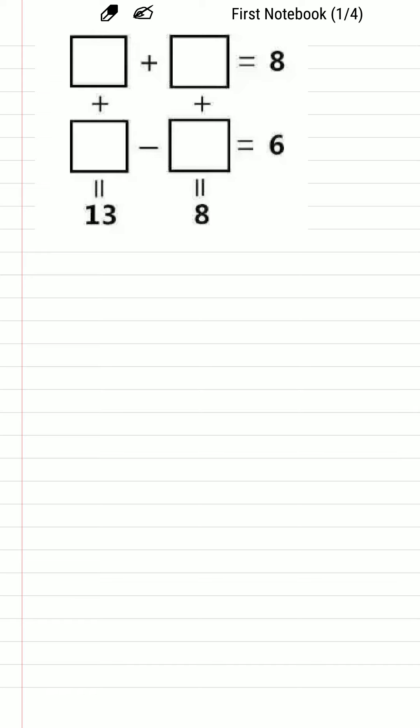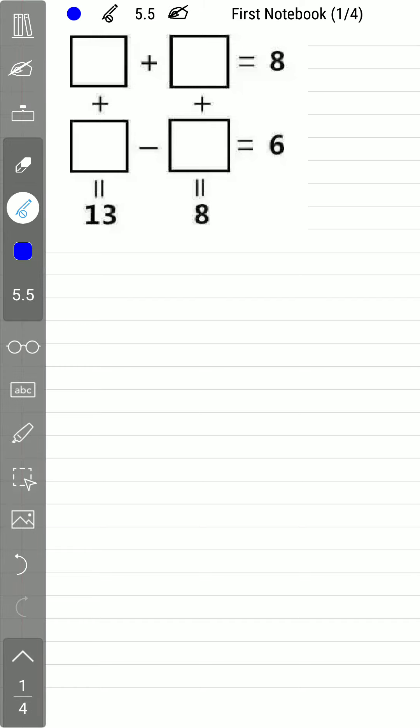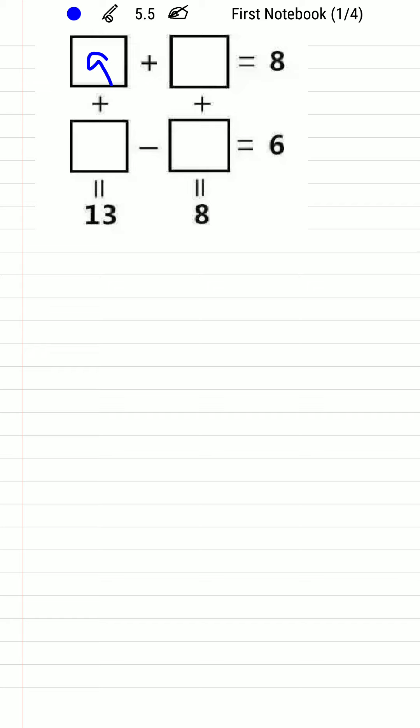Let us begin. As you can see in this figure, we need to enter numbers in the four blocks such that they satisfy the given conditions. Let us assume the first block value as a, second block as b, third one as c, and the fourth one as d.